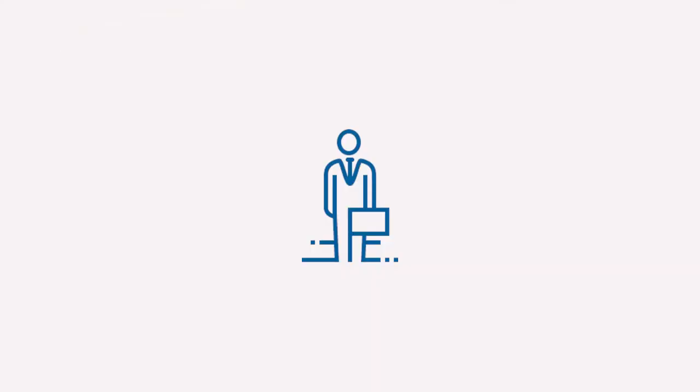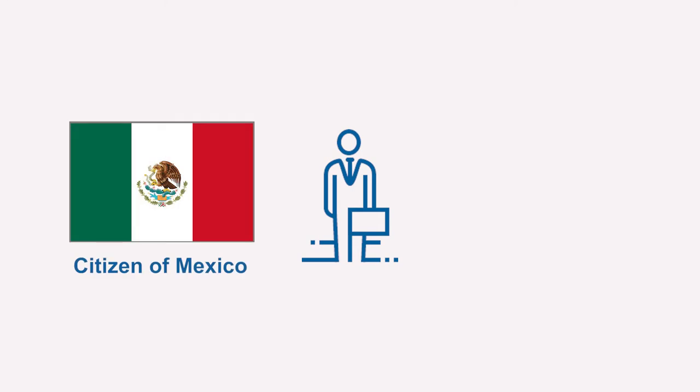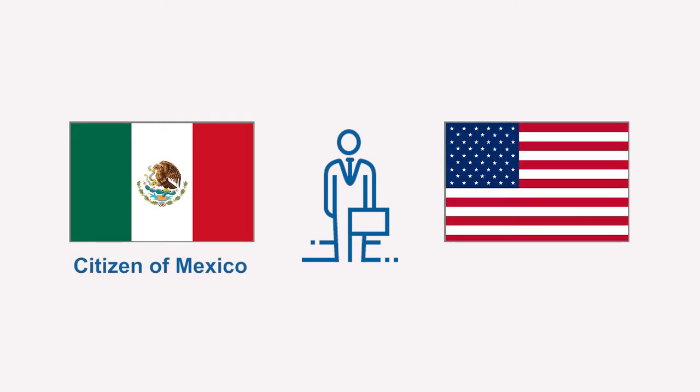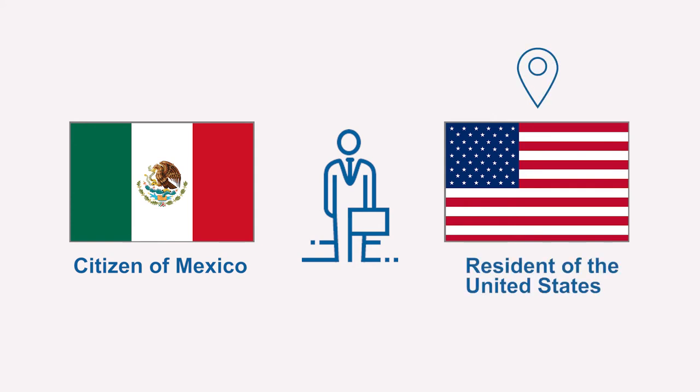Let us take a closer look at the concept of residence by using a couple of examples. We'll start with a household. Miguel is a citizen of Mexico and moves to the United States. He will become a resident of the United States if he intends to live and work in the United States for at least one year. After one year, Miguel's center of predominant economic interest ceases to be Mexico and changes to the United States.